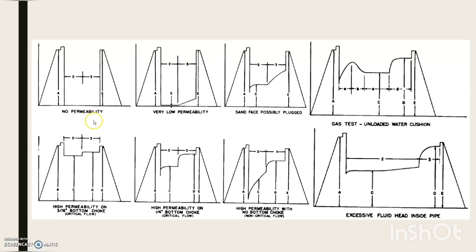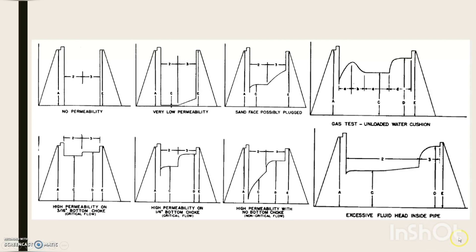Pressure charts also provide information about formation characteristics. If there is no permeable formation, there will be no flow or shut-in period. In case of very low permeability, incoming influx is less and pressure build-up is very low. If incoming influx is very low and pressure build-up is very slow, it indicates that the sand face might be plugged. In a gas test where water is encountered: A represents water cushion rising to surface, B represents water cushion being produced, C represents flowing dry gas, and D represents tool shut-in. In high-permeability formations with critical flow, pressure is more or less constant. The choke size also affects pressure trends. In non-critical flow, pressure build-up is very gradual. Lastly, flowing pressure upstream of the choke remains constant until back pressure due to liquid accumulation inside the pipe becomes excessive, resulting in a diminishing flow rate, indicating excessive fluid buildup inside the pipe.